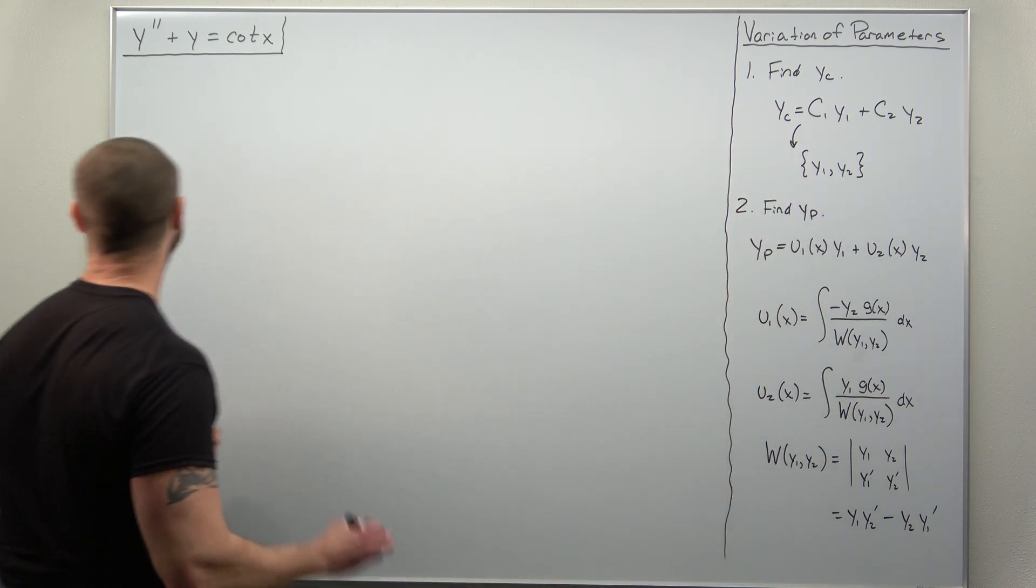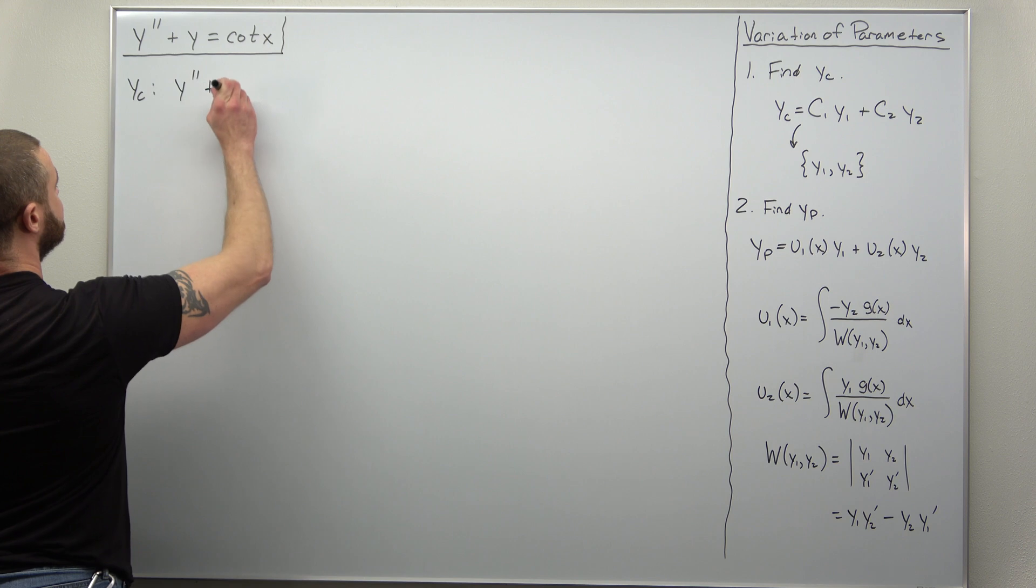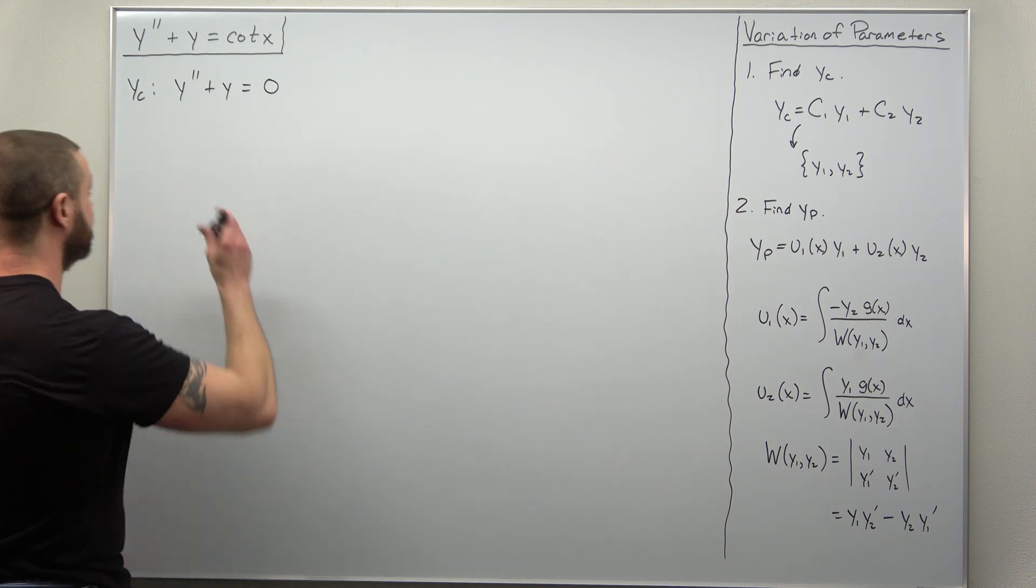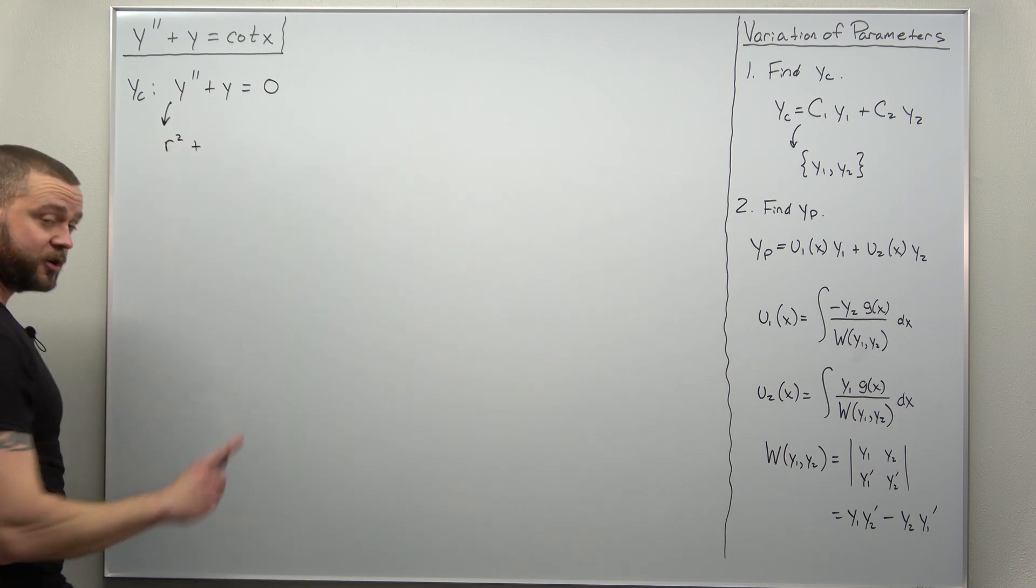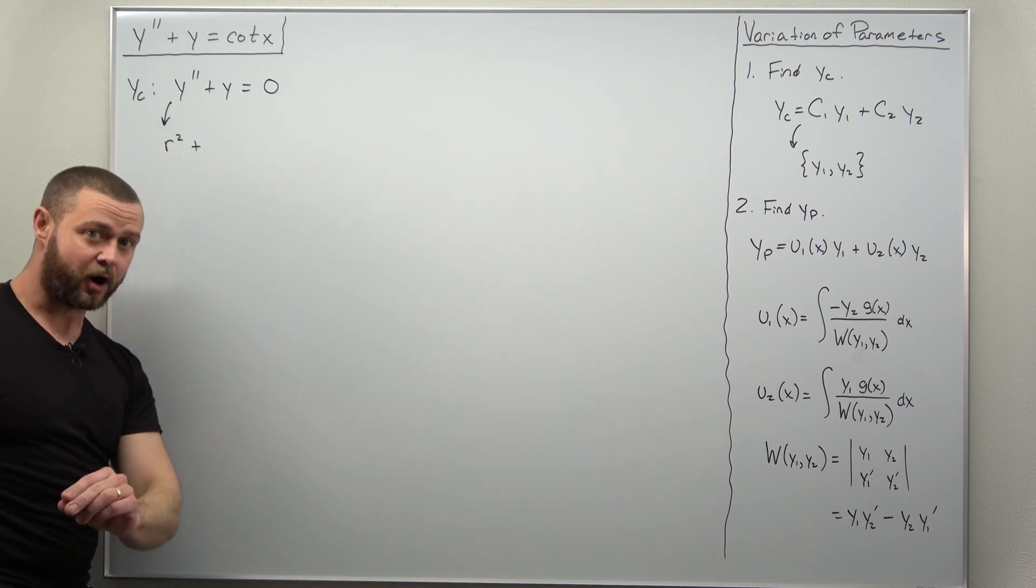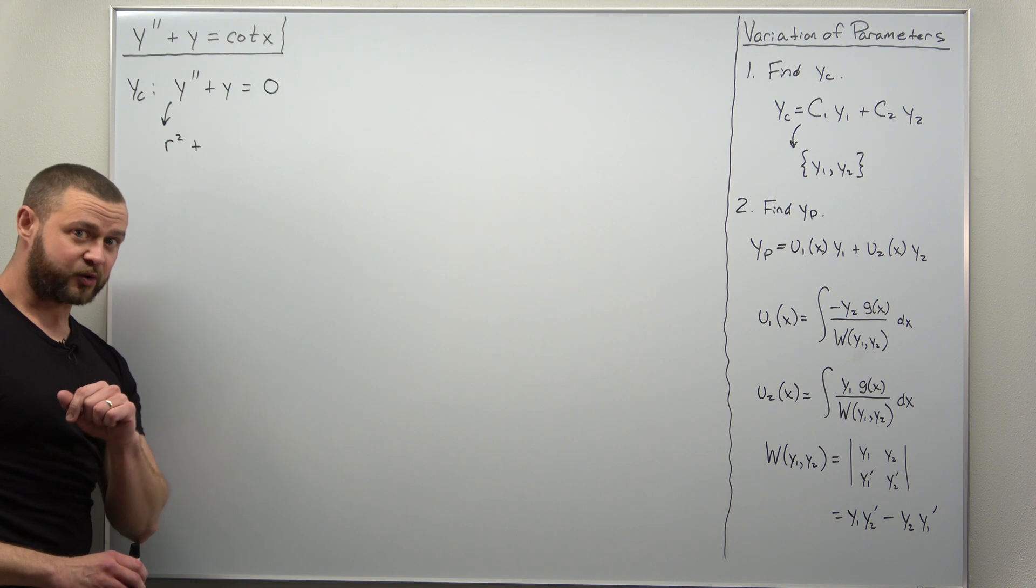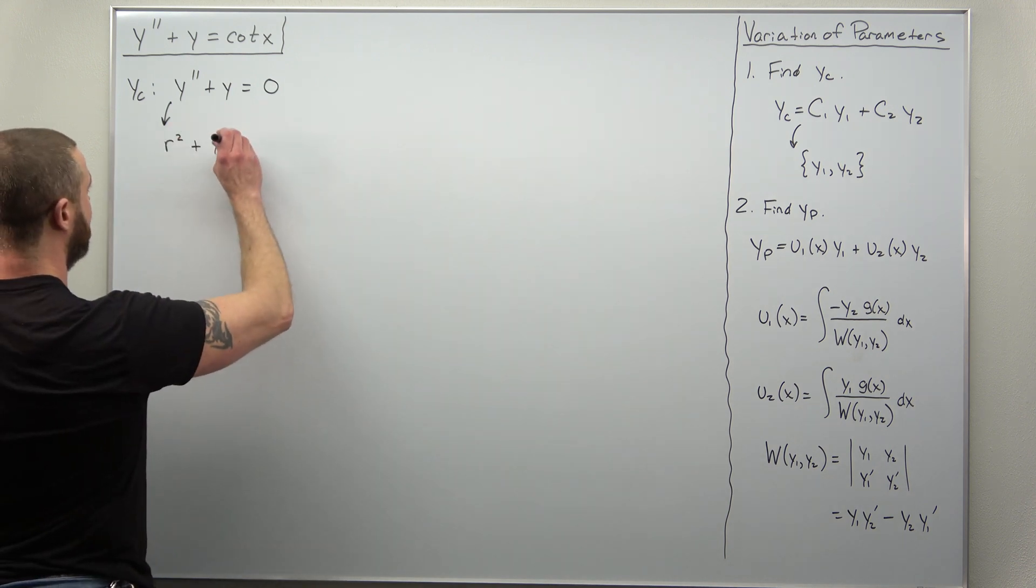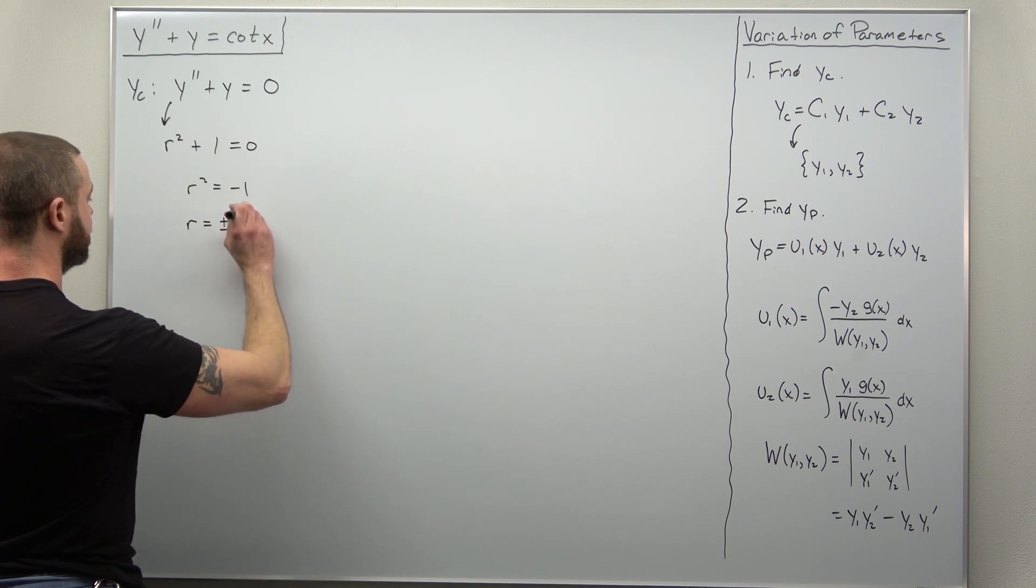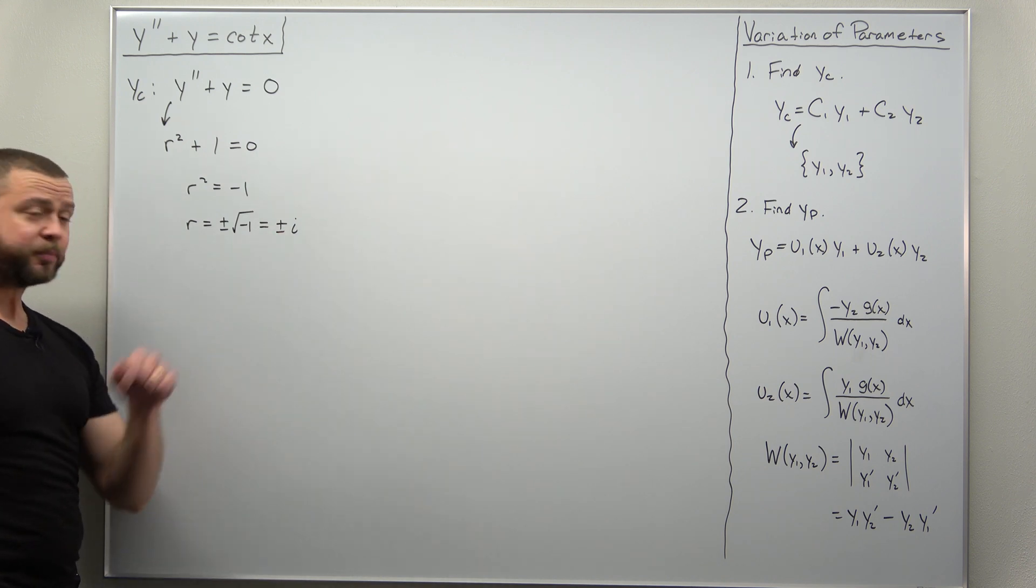Step one: we're going to find the complementary solution. So we solve the homogeneous ODE where the right-hand side is zero. You've probably solved this one a lot or one that's very similar. This converts to the characteristic equation. And again, be careful - it's r squared plus your y does not give you a factor of r. Only y prime and y double prime give you factors of r or r squared. So converting, you'll get r squared plus one. We can easily solve that - subtract one and then take a square root. So we get as our characteristic roots plus or minus i.